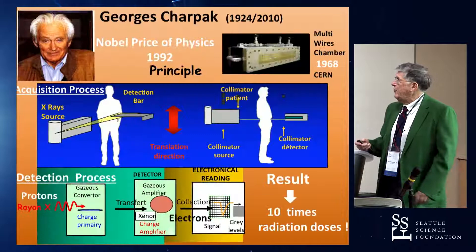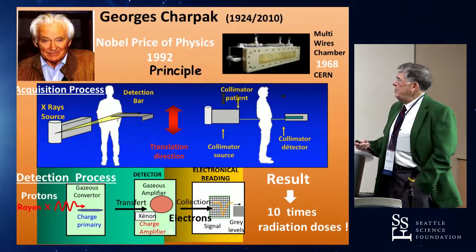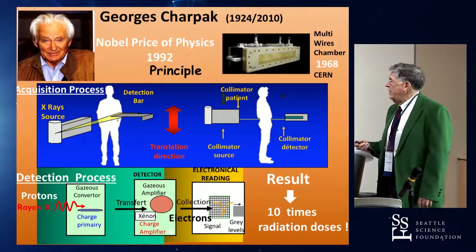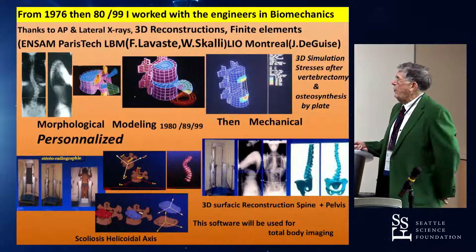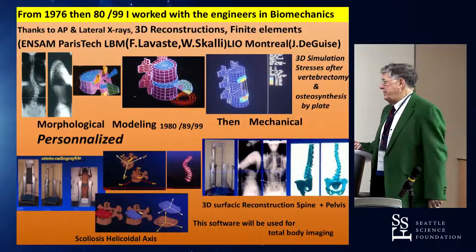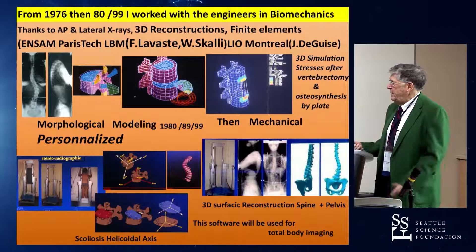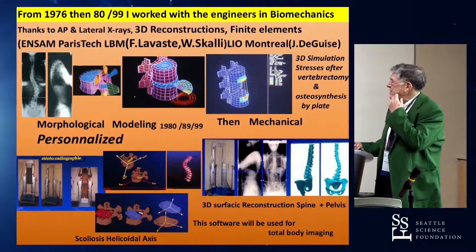We will speak about the total body imaging of the human. And of course, this came from the junction between this man, Nobel Prize, who with a multi-wire chamber reduced the radiation dose 10 times by changing proton to electron. And because we worked from a long time with the engineer to try to reproduce the real three-dimensional deformity of the spine, with this surface reconstruction that we performed with finite element at the Ensam Institute in Paris.